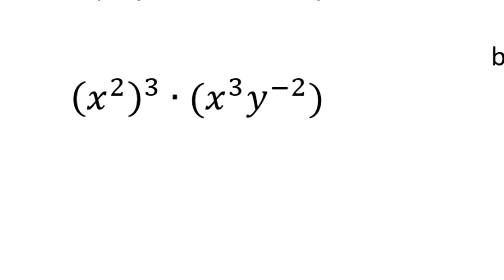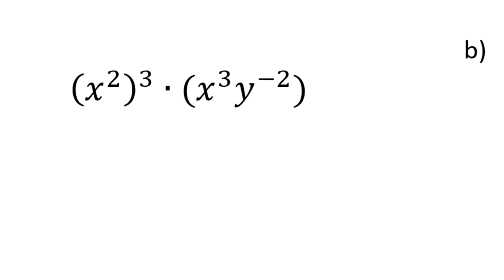If I look at part A, the first thing that I see is I have 3 of these x squared. So I can write it out: x squared times x squared times x squared is x to the 6th. And it shouldn't be much of a surprise.